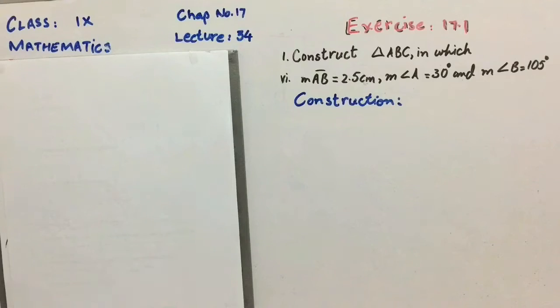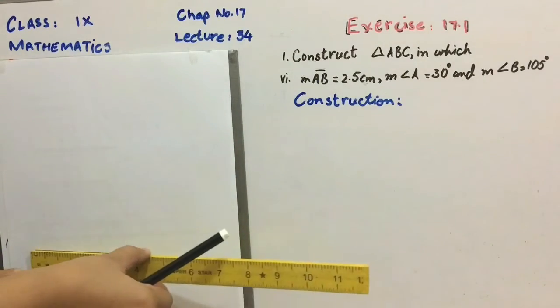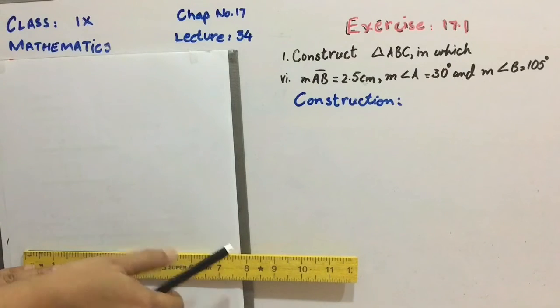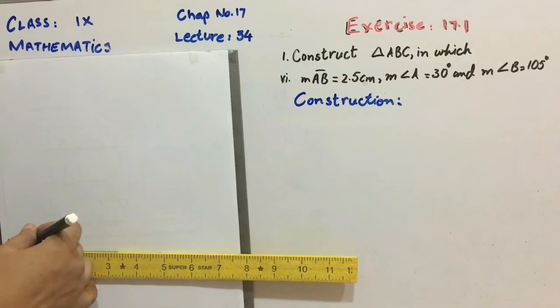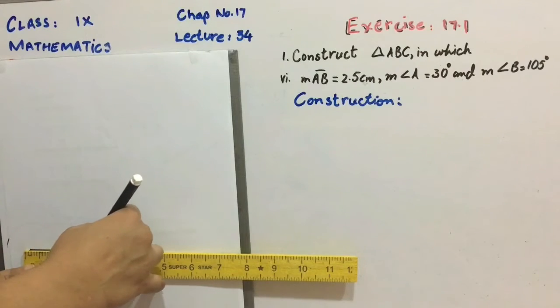So let's start with the given side. Our given side is measurement AB which is equal to 2.5 cm. First of all we will take a line segment AB of 2.5 cm.